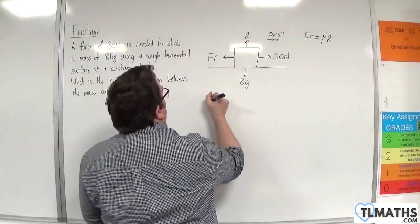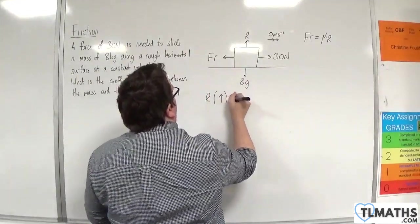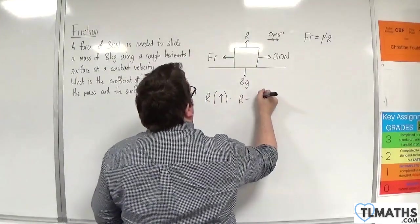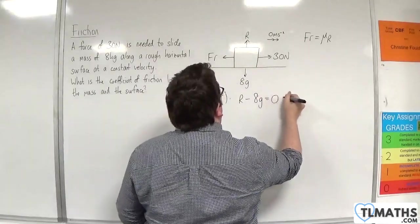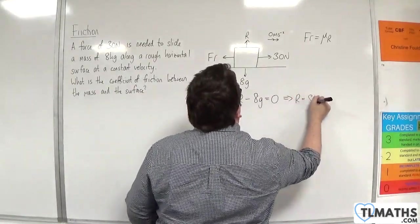If I resolve vertically, taking upwards as positive, we'll have R take away 8g is equal to 0. So R is 8g.